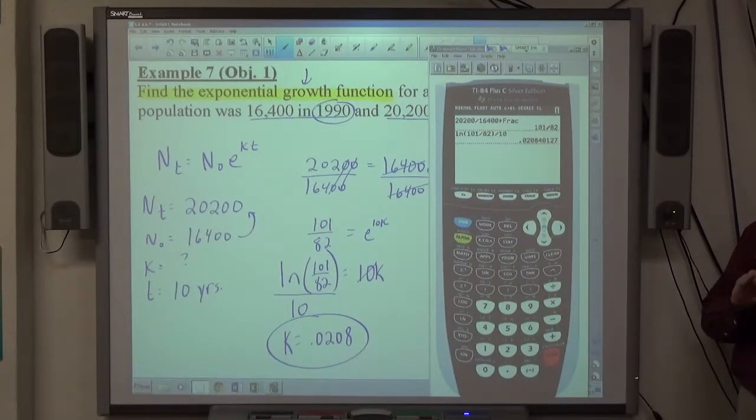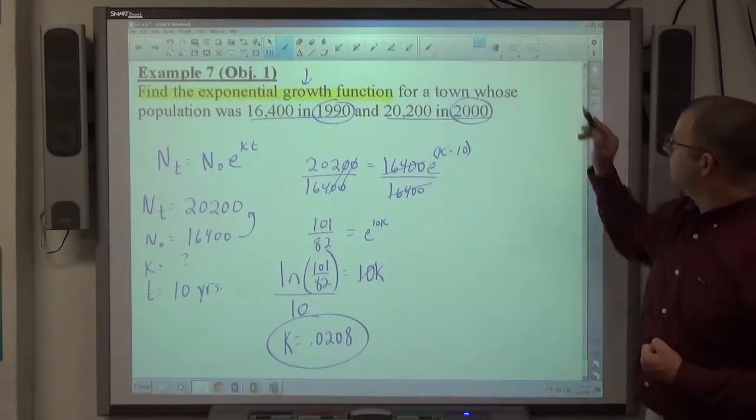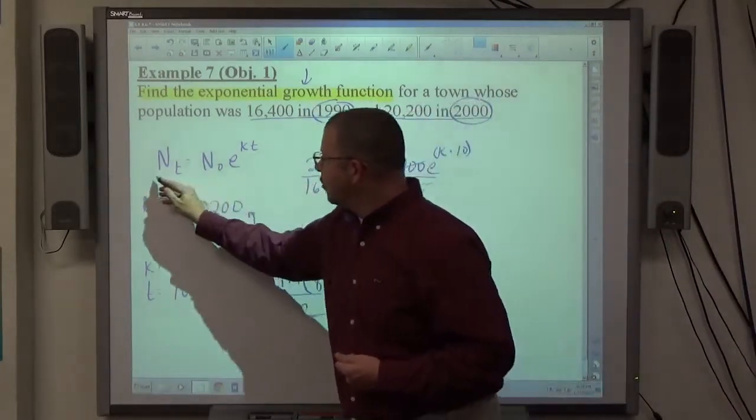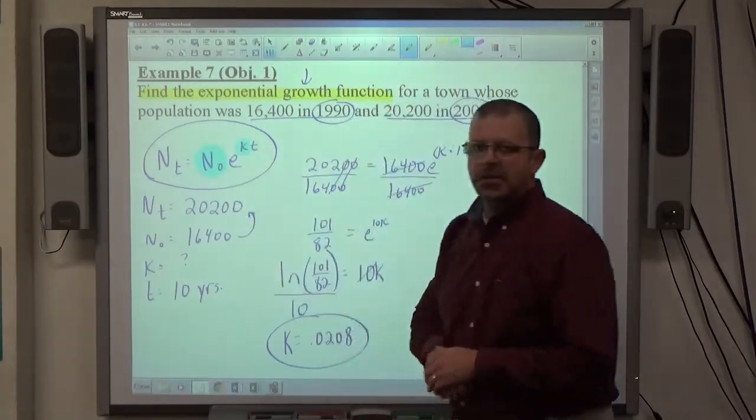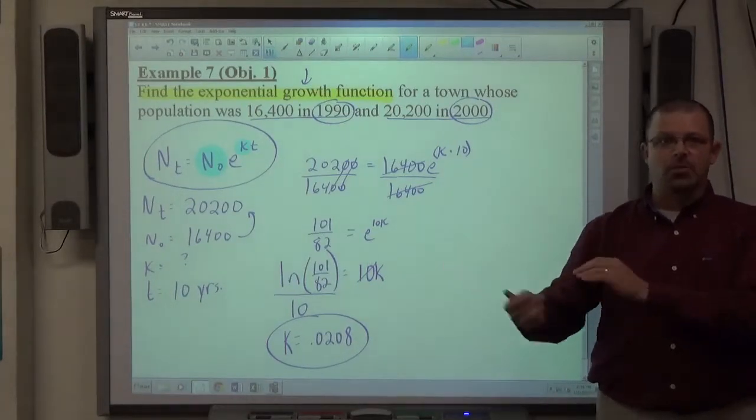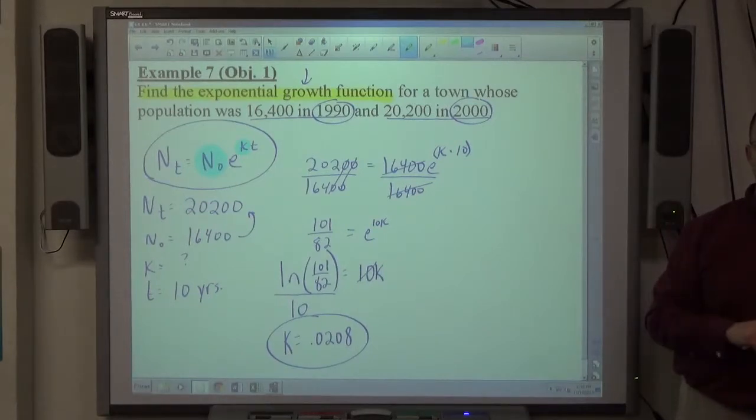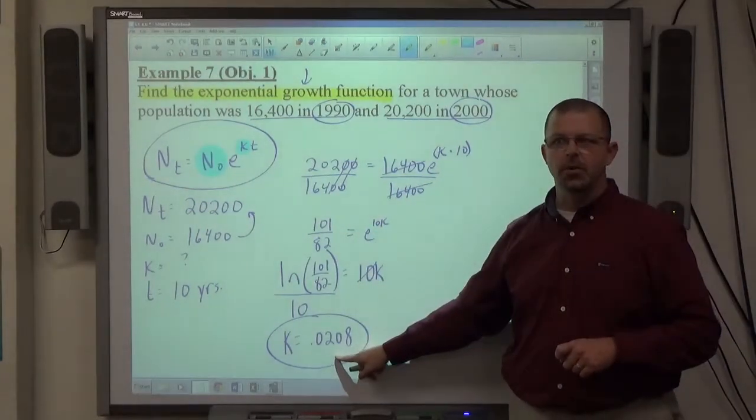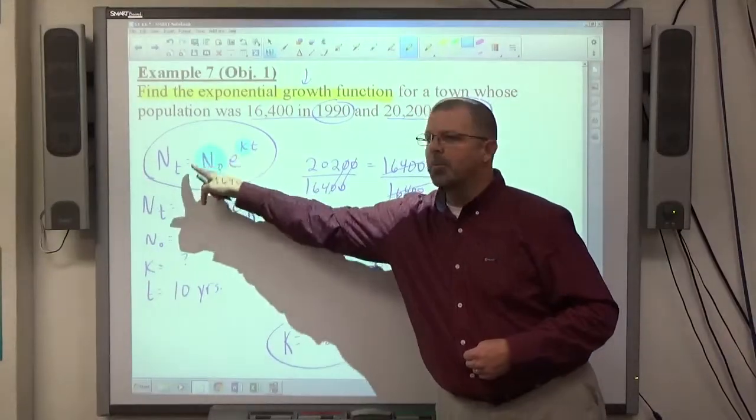This is a pretty straightforward thing that's going to happen every time you do an exponential growth function. They're going to tell you the beginning, the ending, and how many years, minutes, hours, whatever passed. Your first job is going to be to find k. Then, once you know what k is, we want to write the exponential growth function. This is what an exponential growth function looks like, with one exception, N sub 0 and k are both constants. The population began at 16,400. That's not going to change. If you look back in history, and the population was something at some point in time, that's what it was. As time goes on, the population is changing, but at 1990, the population was 16,400 constant.